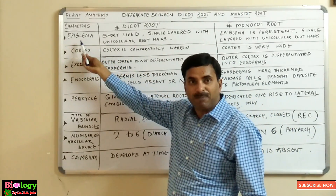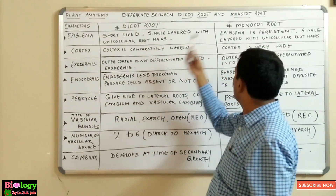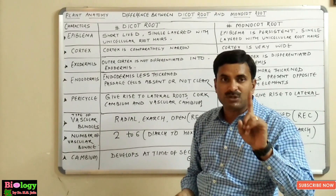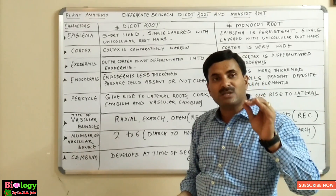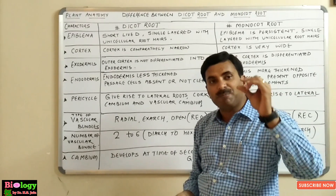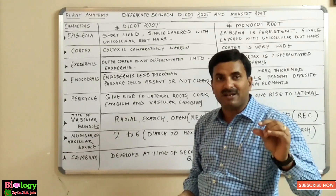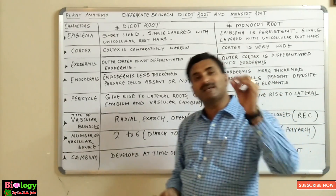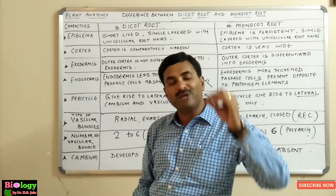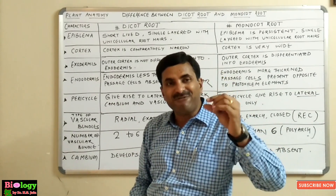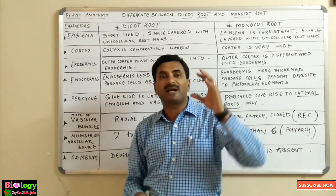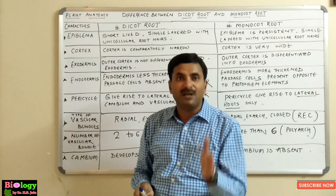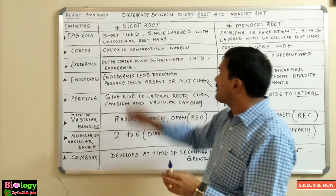The first character is epiblema. Epiblema means epidermis. One thing to note is that in the case of stems we use the word epidermis for the outermost layer, but in roots we don't use the word epidermis. Instead we use the word epiblema, also called the piliferous layer or rhizodermis.